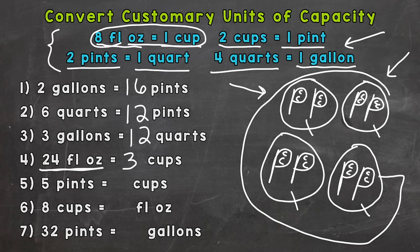Number five: five pints equals how many cups. There are two cups in one pint, so we need to find out how many in five. We could do five times two, which gives us ten cups.